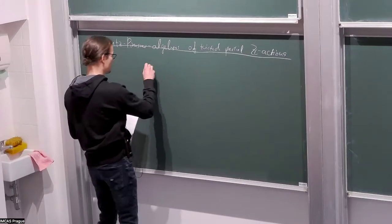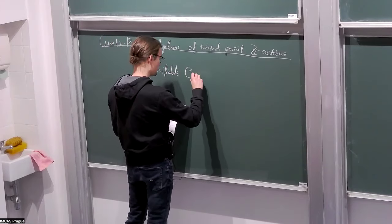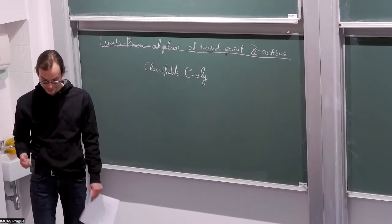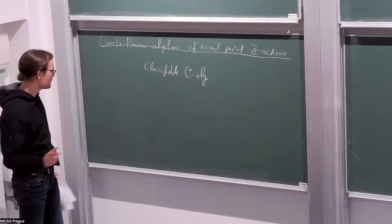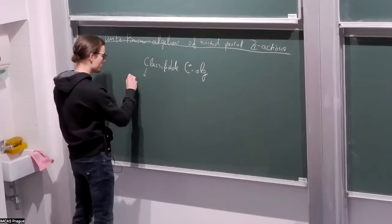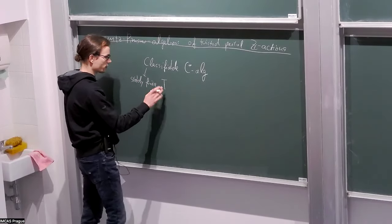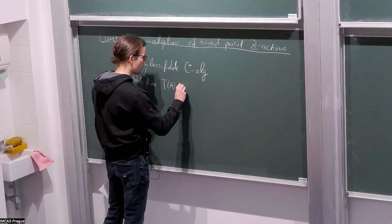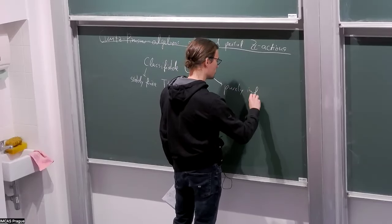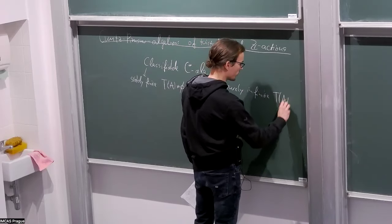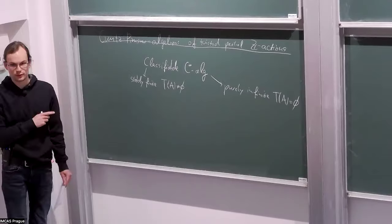If we take a classifiable C*-algebra — that is, a C*-algebra that is unital, infinite, simple, separable, nuclear, Z-stable, and satisfies the UCT — then we have two options. Either the C*-algebra is stably finite, meaning the tracial state space is non-empty, or it will be purely infinite if we don't have traces. For classifiable C*-algebras, having or not having traces is equivalent to being stably finite or purely infinite.